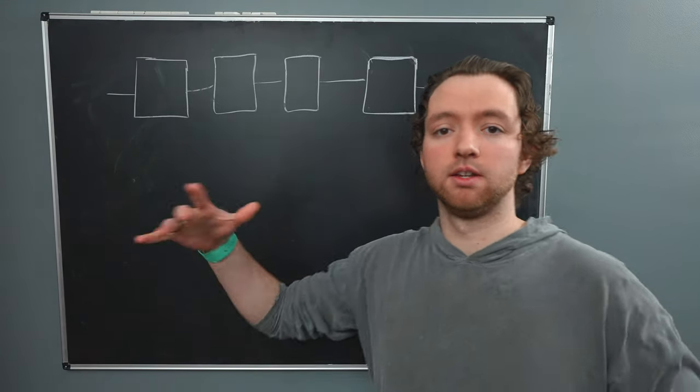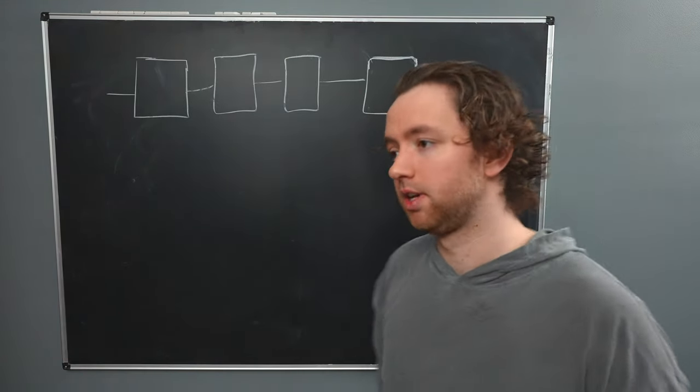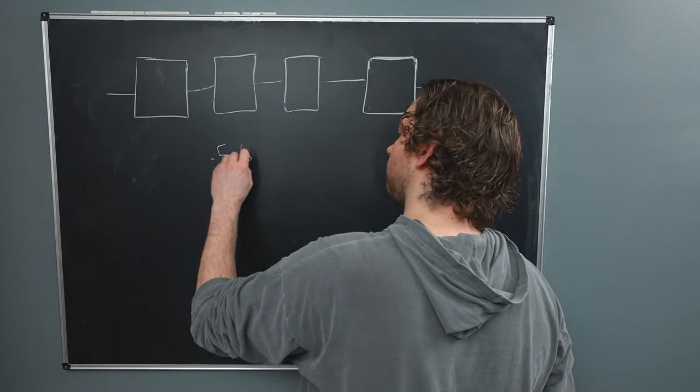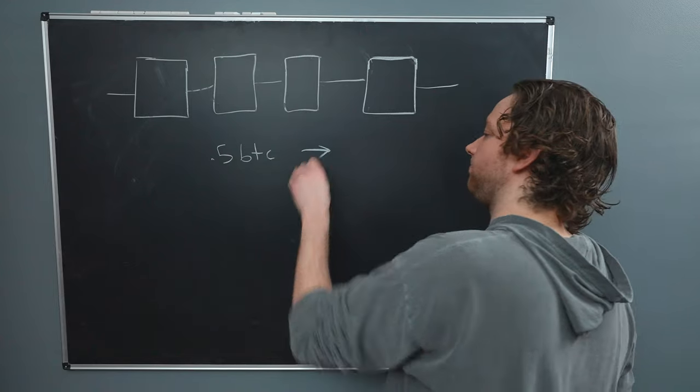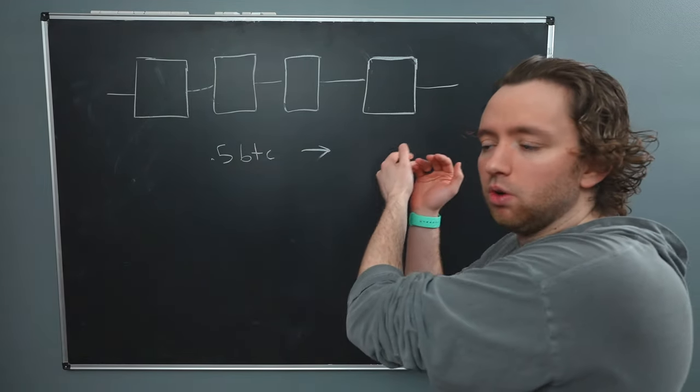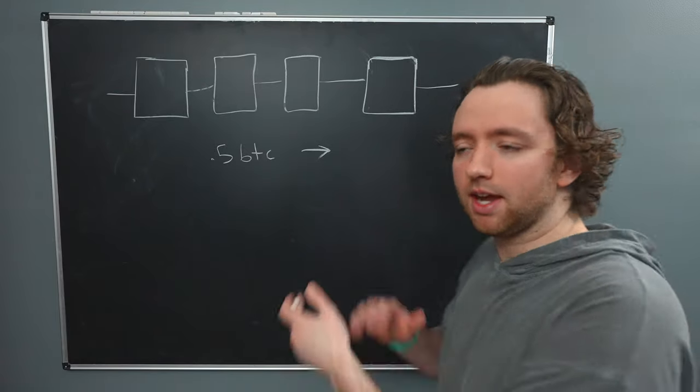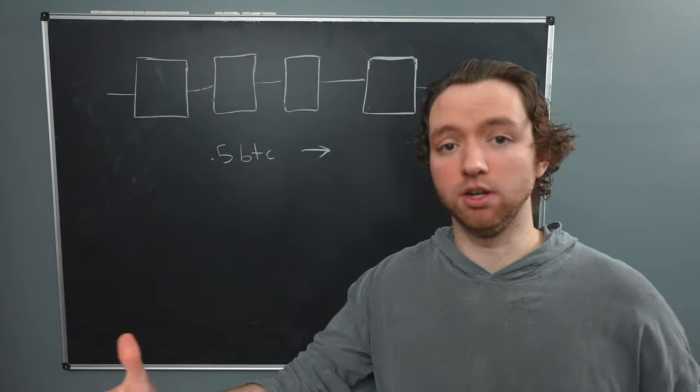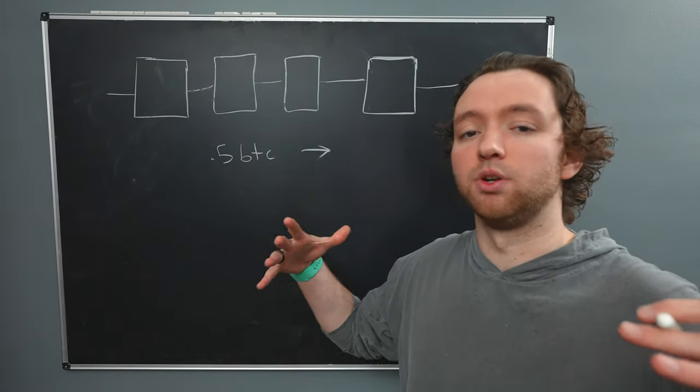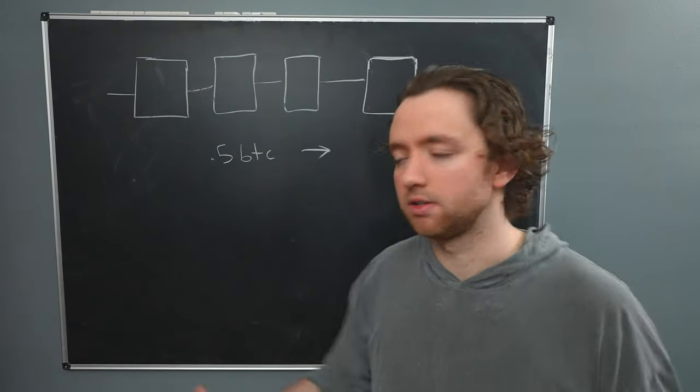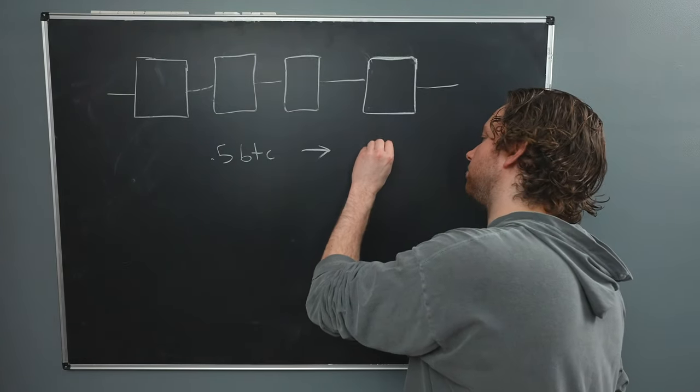So each one of these blocks contains transactions. So it might be something like 0.5 Bitcoin to. And what's this to here? What do we put here? Well, I mentioned in the previous video that it doesn't have the person's name. It doesn't just give out everybody's identity. We have pseudonyms. And this is actually going to be an address. It's just a combination of characters. So we'll just put address.